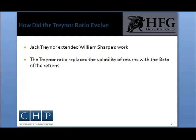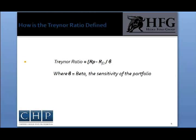The Treynor ratio measures the efficiency of a portfolio relative to the overall market performance. The formula is similar to the formula used in the Sharpe ratio, but it replaces the standard deviation of the returns with the beta of the returns.